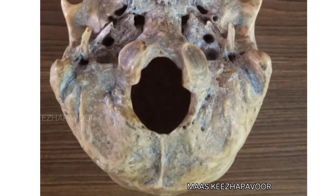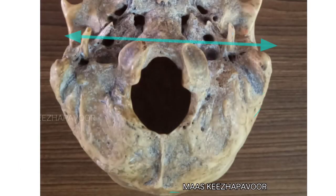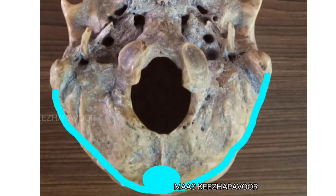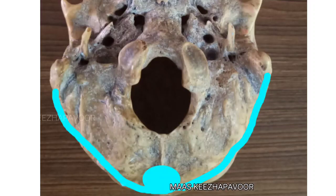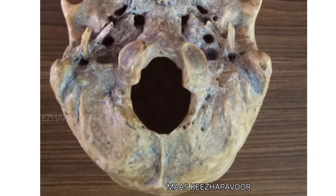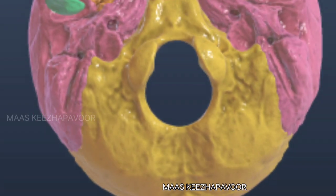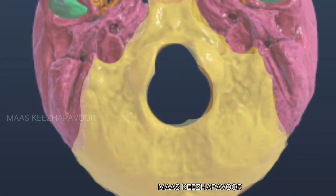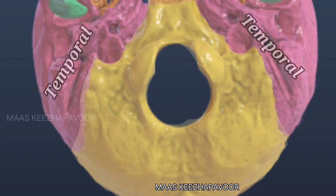The area behind the imaginary line drawn through the anterior margin of foramen magnum up to the external occipital protuberance with superior nuchal lines is the posterior part of Norma basalis. The bones seen in this area are the occipital and temporal bones.